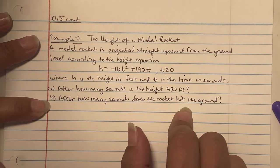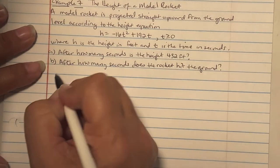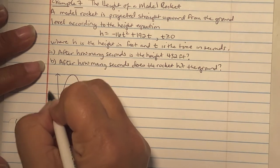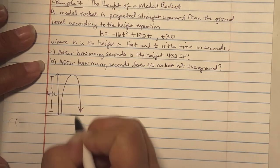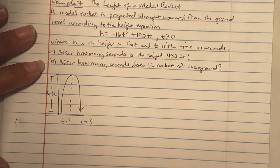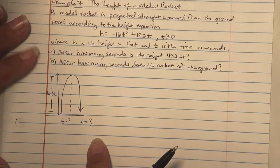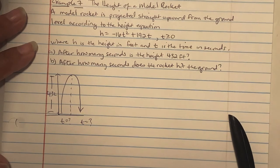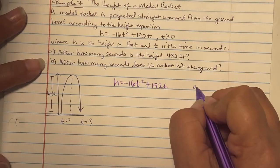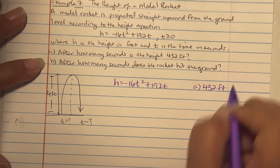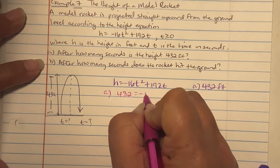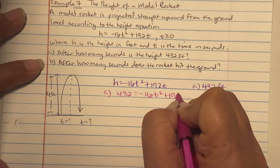First, I'm going to do a rough sketch. Our rocket went up and then came back down, and it hit a height of 432 feet. They want to know the time frame for when it hit its peak and when it came back down. They gave us the equation h equals negative 16t squared plus 192t. Part A, they're looking for the time when it hits 432 feet. For part A, I'm going to do 432 equals negative 16t squared plus 192t.